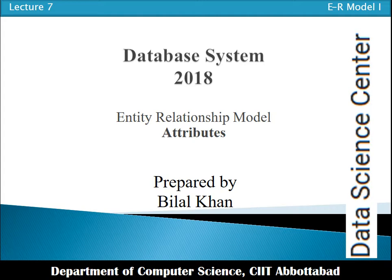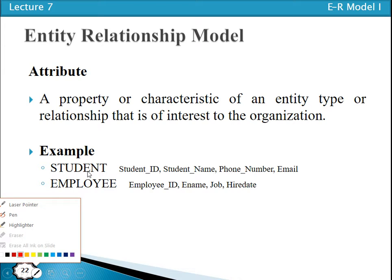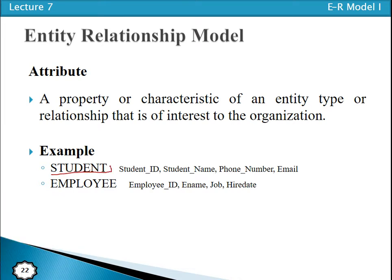For example, one entity type available is 'Student.' What are the properties of students? We should have student ID, student name, student email, phone number, address, location — things like that. These are the properties of the student, so these are the attributes. Similarly, for a Teacher entity type, properties like teacher ID, teacher name, and teacher qualification are the attributes of the Teacher entity.